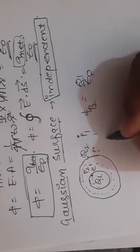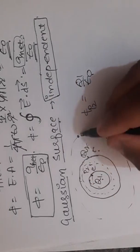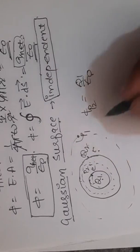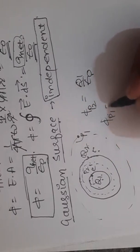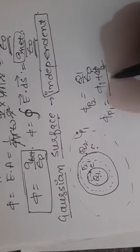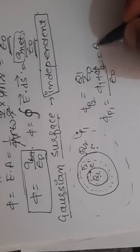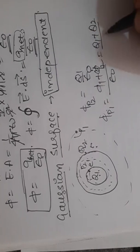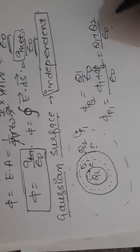If it is P1, again you draw the Gaussian surface, imaginary surface. What is electric flux through P1? What is net charge? Q1 plus Q2 divided by epsilon_0. And that answer will be this.